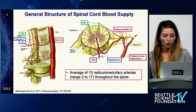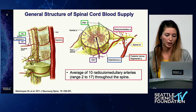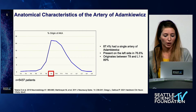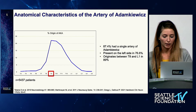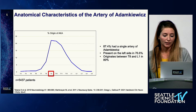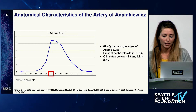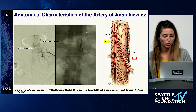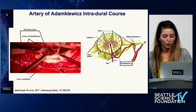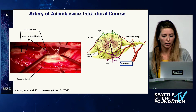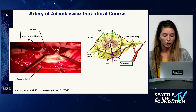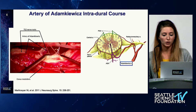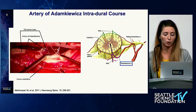I'm going to mainly focus on considerations for taking this vessel during surgery. This is a chart from a meta-analysis of over 5,400 subjects. Most patients have a dominant radiculomedullary artery — the artery of Adamkiewicz — most commonly found at T9–L1 on the left. On spinal angio, the artery makes a hairpin turn as it goes in to supply the anterior spinal artery. Here you can see an intraoperative intradural photo of the artery running along the T12 nerve root. One of the concerns is that if you tie off a nerve root during a case, you could potentially be tying off the artery of Adamkiewicz as well.